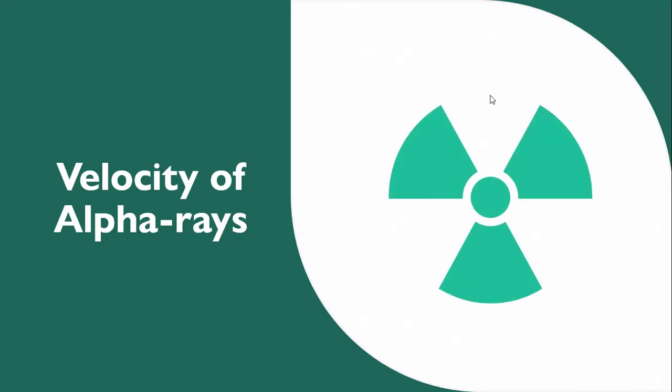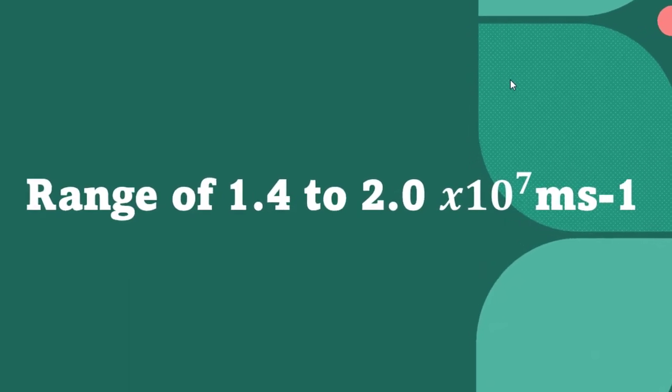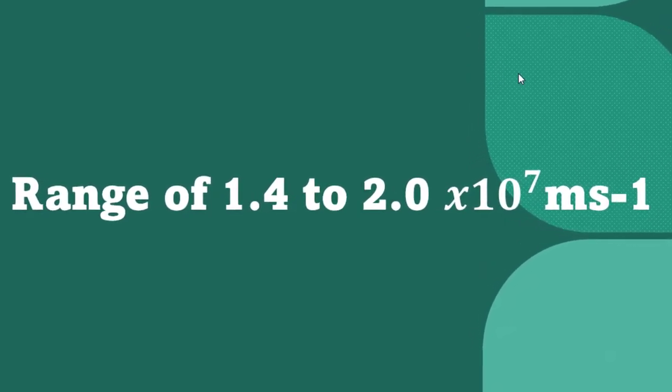Next we discuss the velocity of alpha rays. We know that alpha rays move with the velocity of range 1.4 to 2.7 meters per second.